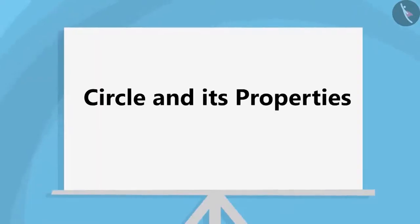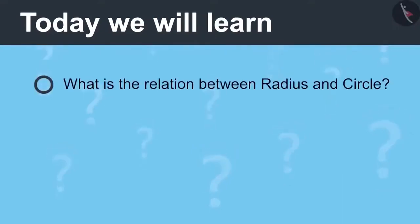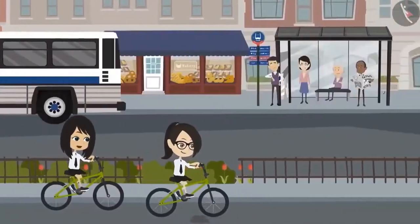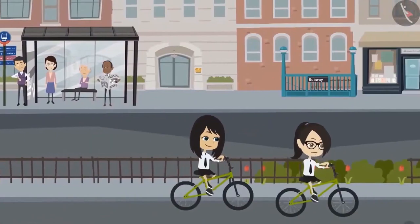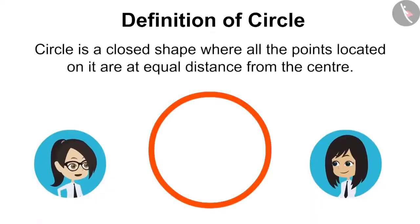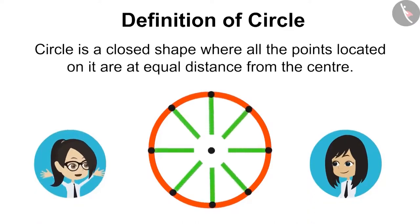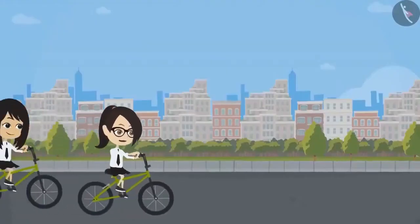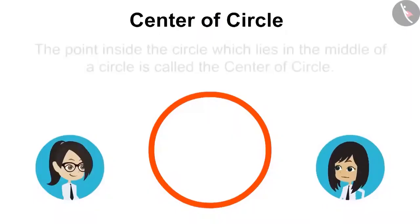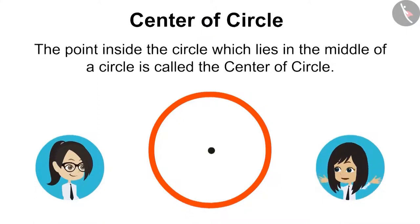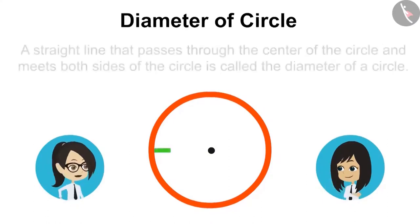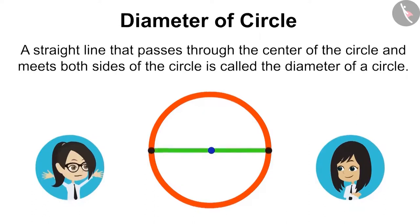Circle and its Properties, Part 2. Today we will learn the relation between radius and circle. Remember what Sir told us about circle yesterday? Circle is a closed shape where all the points on it are at an equal distance from the centre. The centre is the point inside the circle which lies in the middle. A straight line that passes through the centre and meets both sides of the circle is called the diameter.